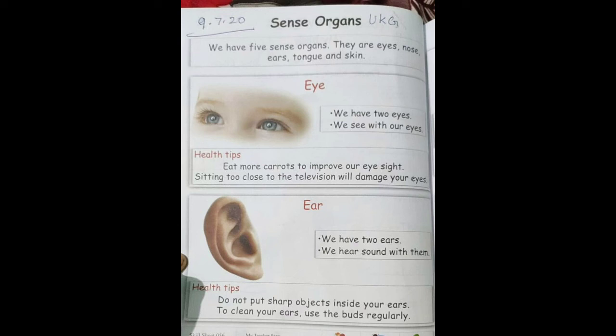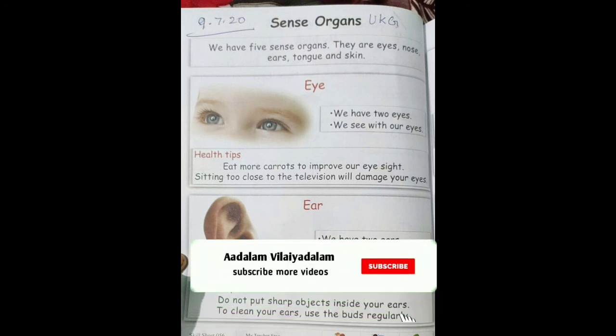Eye — we have two eyes. We see with our eyes. Ear — we have two ears. We hear sound with them.